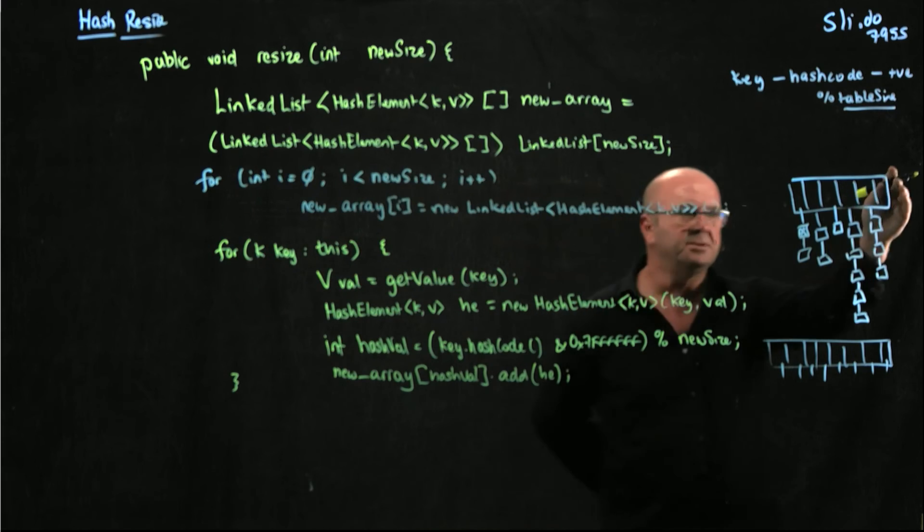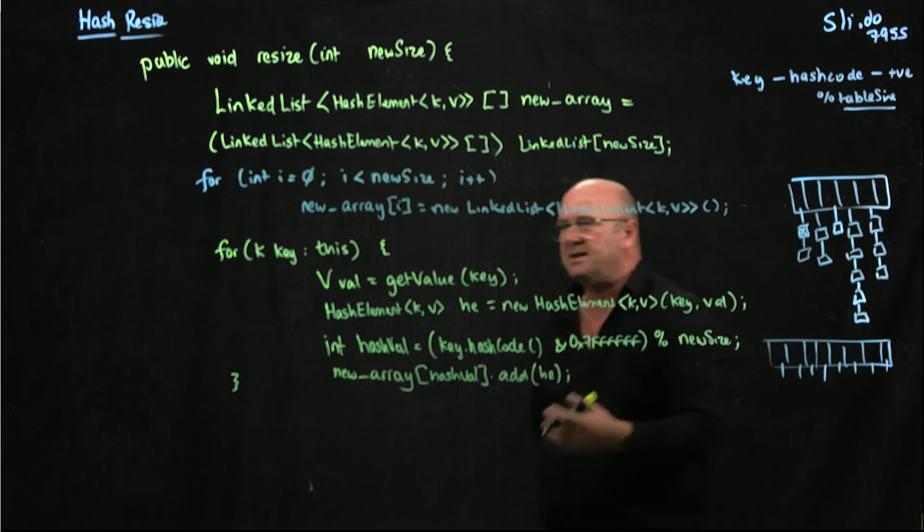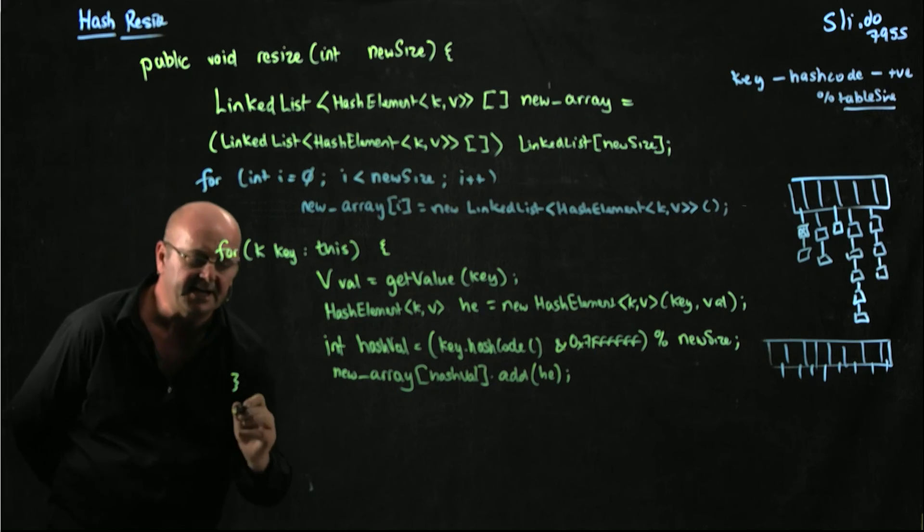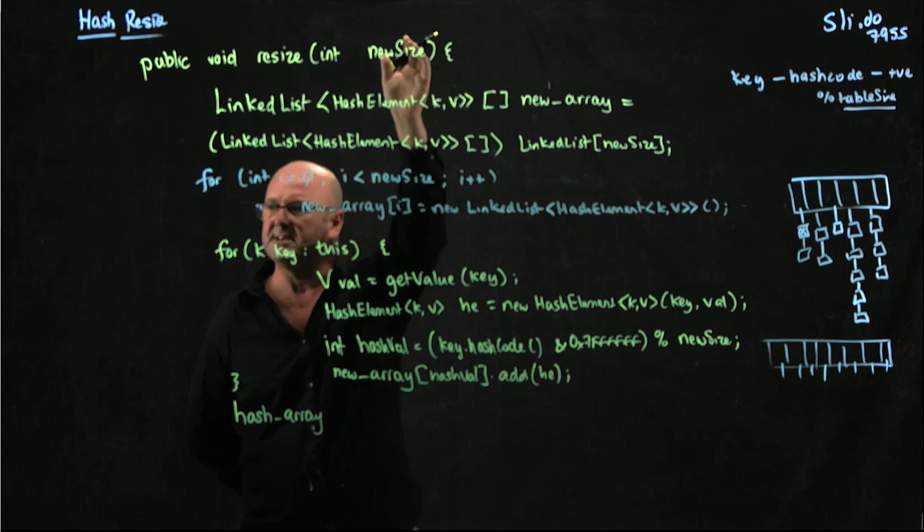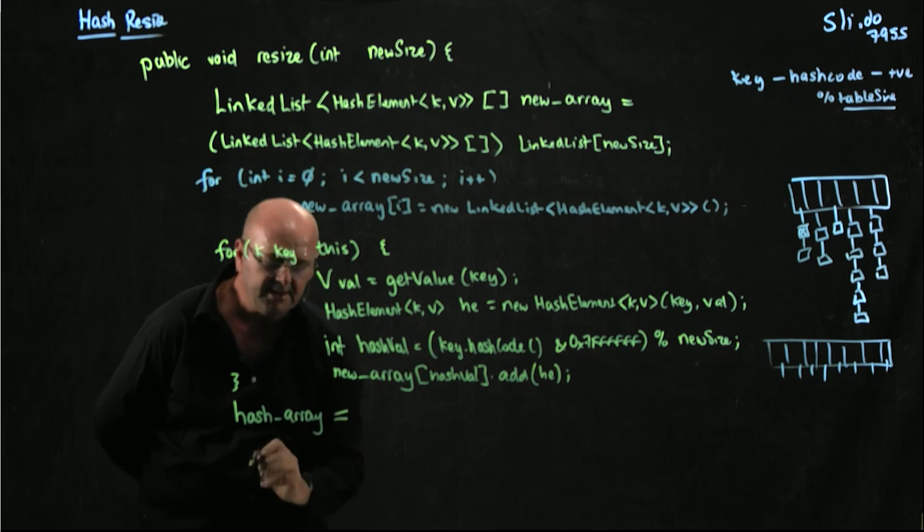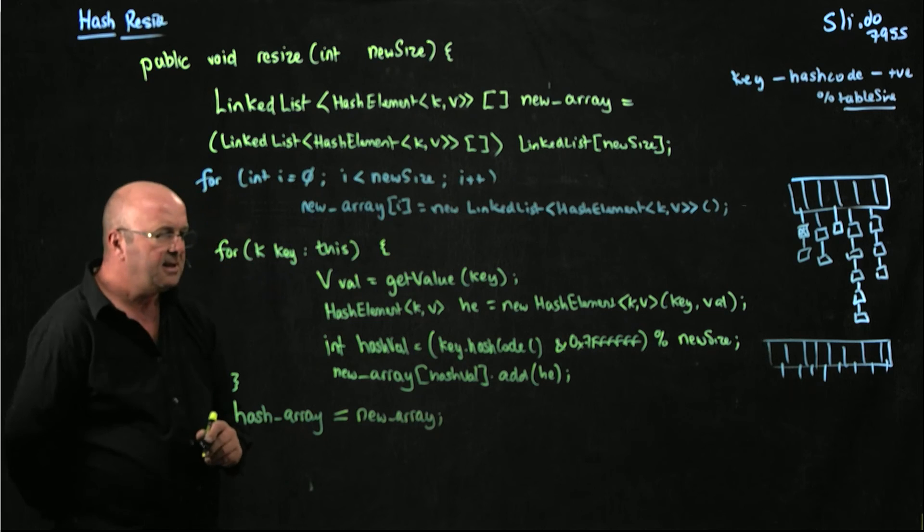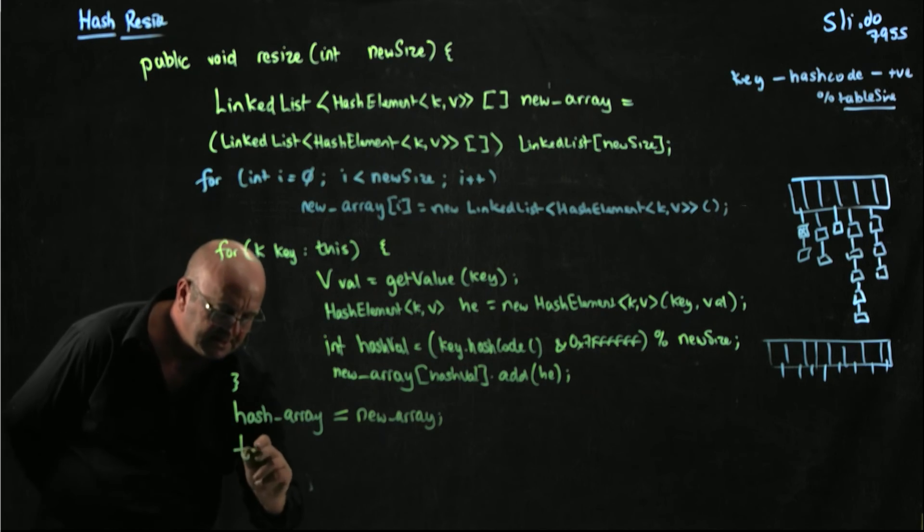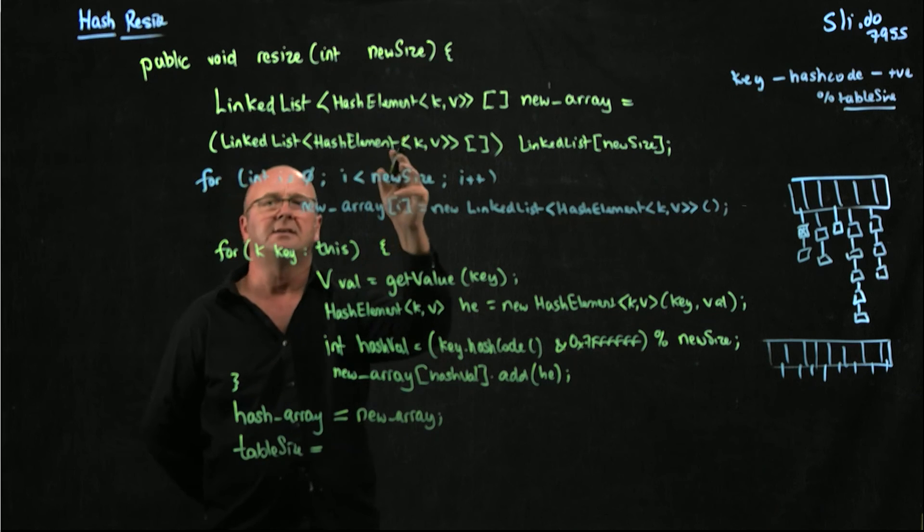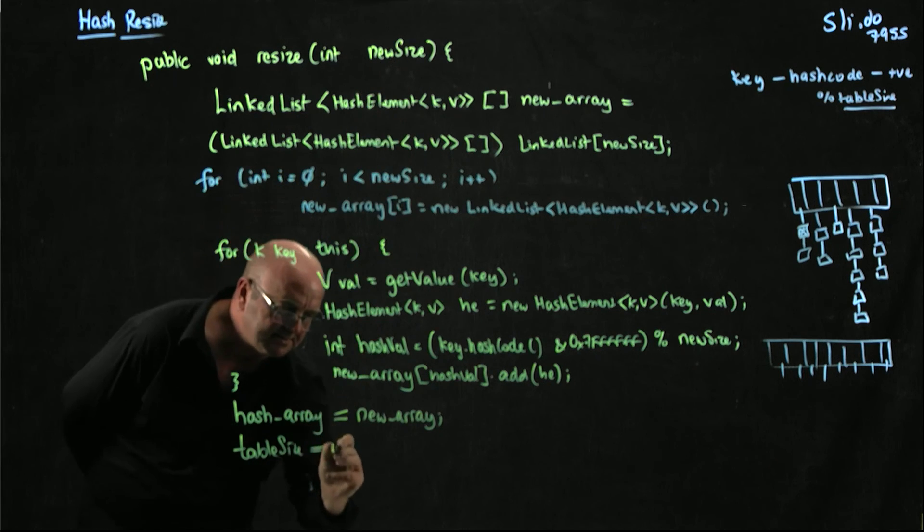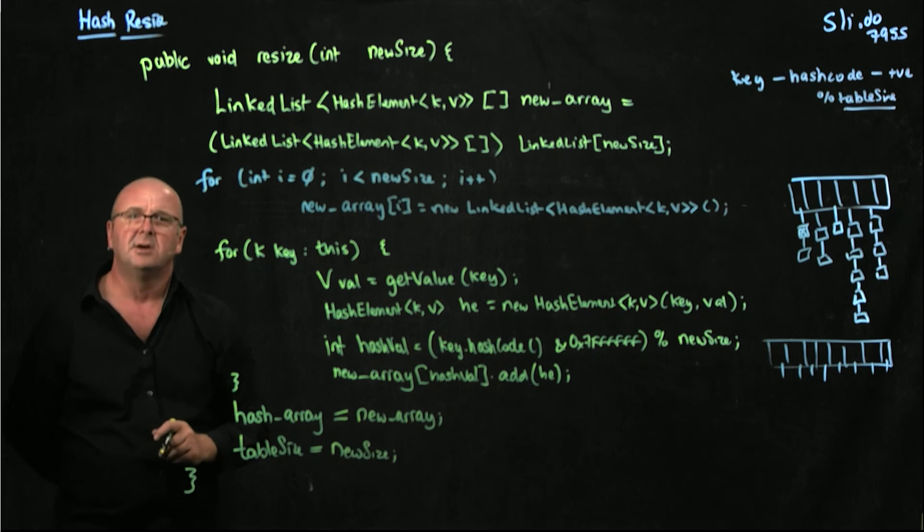Once we've done this, we've now got two copies of our data structure. We've got the original one and we've got the new one. We just want to get rid of the original one, replace it with a new one, and our original data structure was called hash array. Remember, this new array variable is only scoped within this resize method. So here we make our hash array point to our new array. Then the other thing we need to remember is to set table size, which is our globally scoped variable for the table size that we need when we're doing anything associated with a key. We're going to set that to be the new size. And that's it. We've resized our hash.